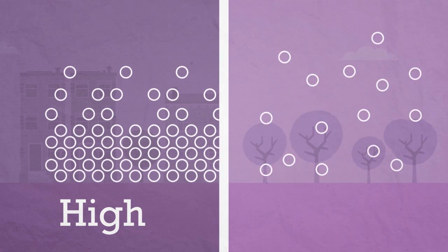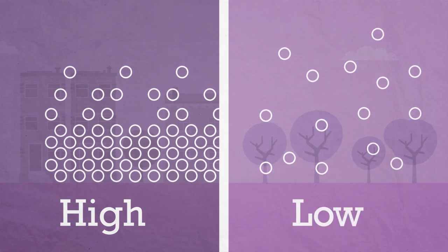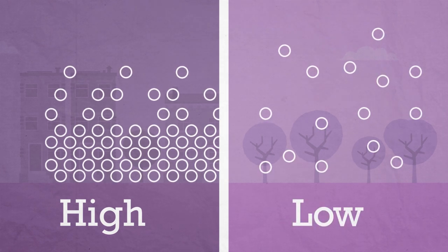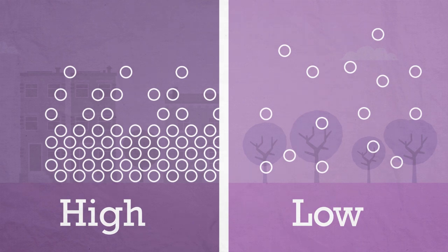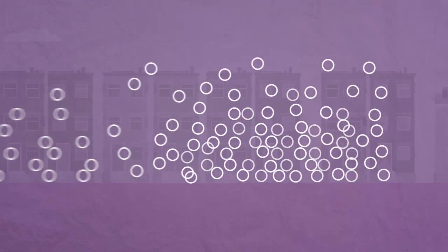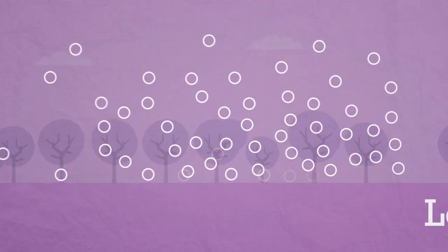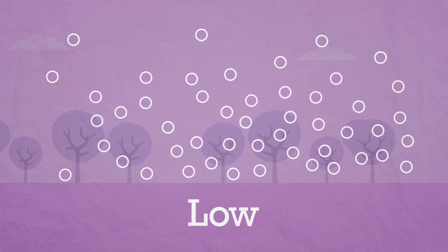When air is rising, we get low pressure and so less air is pressing down on the ground. Air moves from being squashed under areas of high pressure to areas of low pressure where it is less squashed. This movement of air from high to low pressure creates wind.